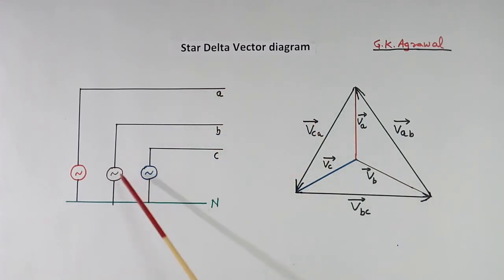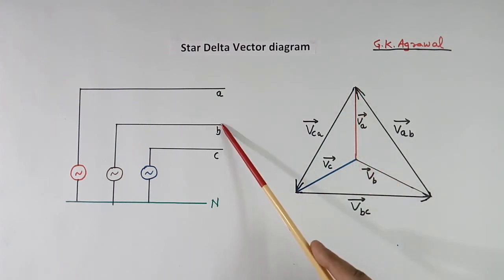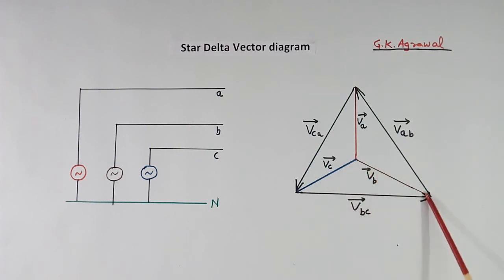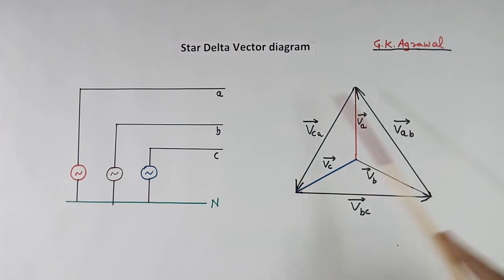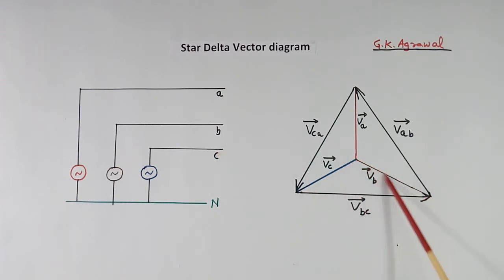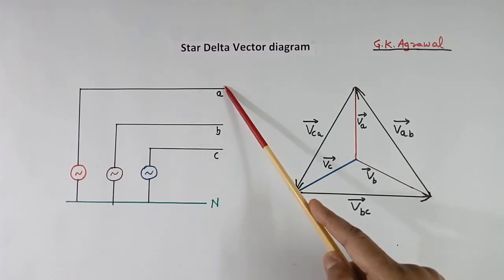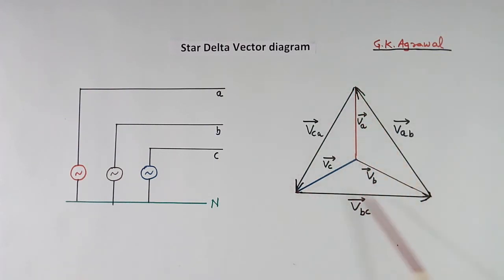With 3-phase supply there will be 6 voltages total: 3 phase voltages and 3 line-to-line voltages. Voltage between A and neutral is phase A voltage, B and neutral is phase B voltage, C and neutral is phase C voltage. Voltage between A and B is the line voltage, between B and C is again line-to-line voltage, and between C and A is also line voltage. The phase voltages form a star diagram, and the line voltages form a delta diagram.